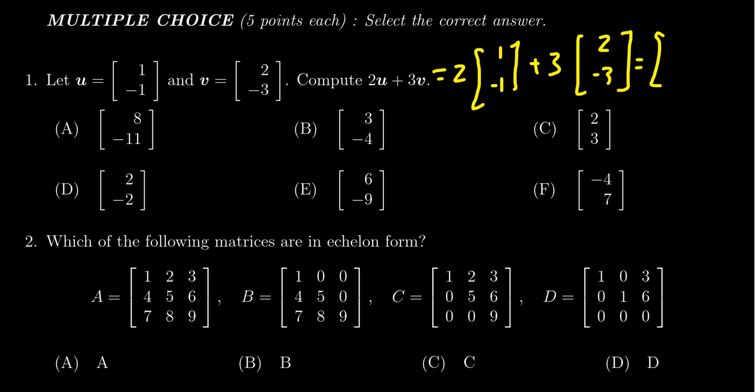Everything in the first one gets multiplied by two: 2 and negative 2. For the second one, multiplying everything by three, we get three times two which is six, and three times negative three which is negative nine.